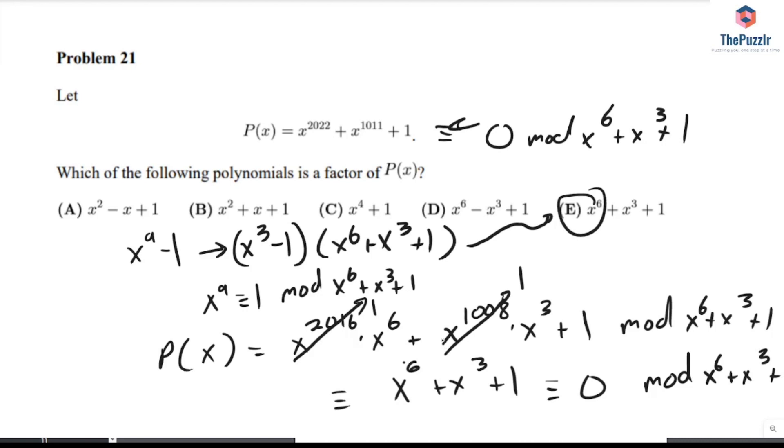Now this might seem a bit out of nowhere, but what should motivate the solution is that if you were to look at these terms mod 9, the exponents mod 9, you'd see that you get 6 and 3, which makes us think of this expression, which makes us think of E. Multiplying by x cubed minus 1 gives us this neat expression.